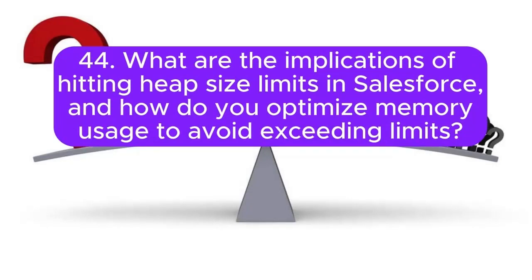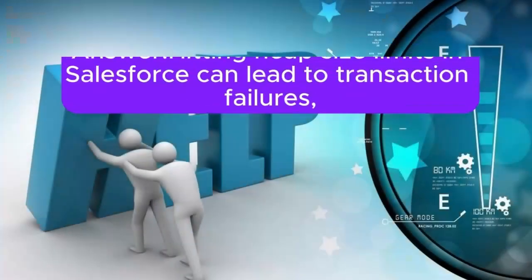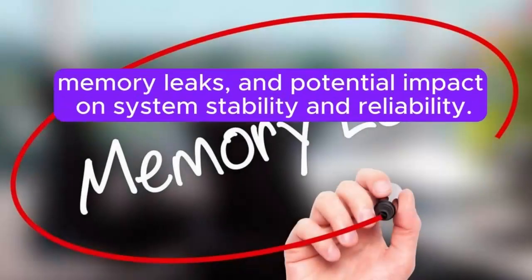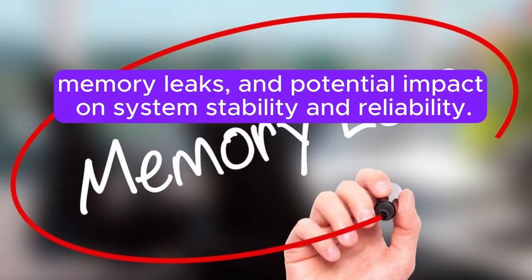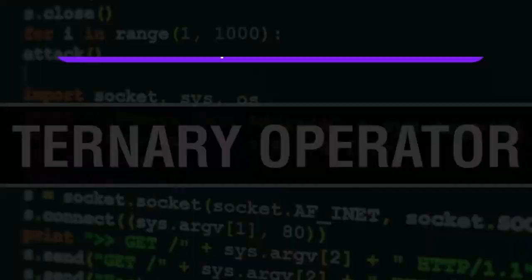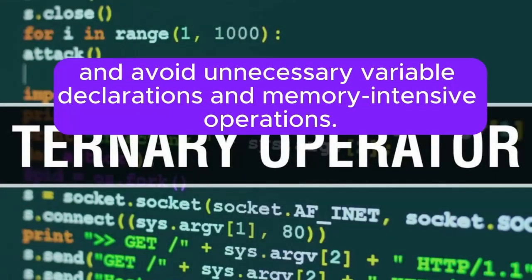Question 44: What are the implications of hitting heap size limits in Salesforce, and how do you optimize memory usage to avoid exceeding limits? Answer: Hitting heap size limits in Salesforce can lead to transaction failures, memory leaks, and potential impact on system stability and reliability. To optimize memory usage, you can minimize the use of large collections, reduce the size of objects stored in memory, and avoid unnecessary variable declarations and memory-intensive operations.